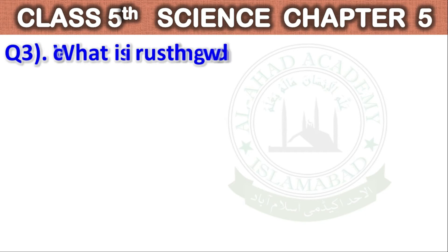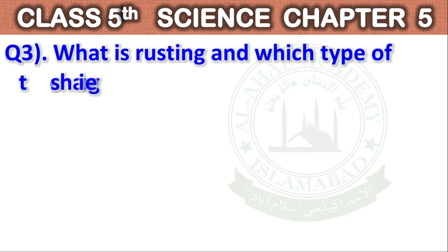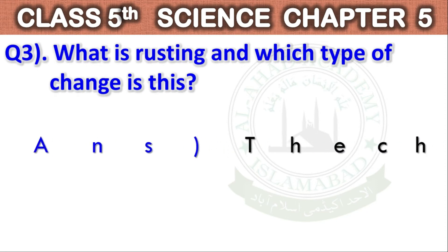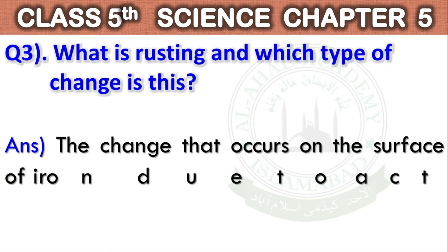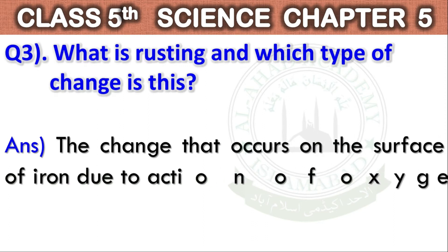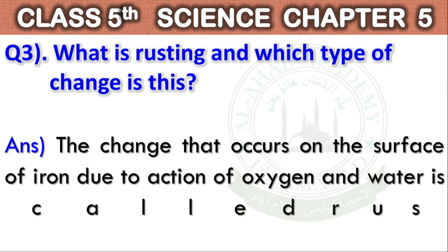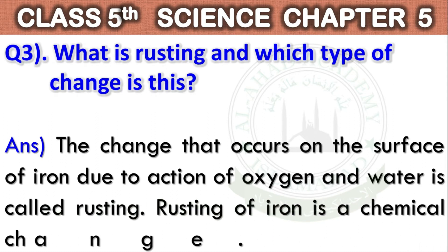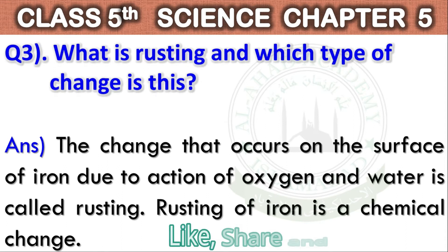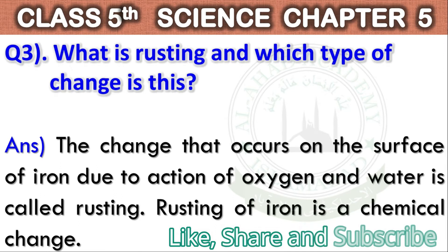Question No. 3: What is rusting and which type of change is this? The change that occurs on the surface of iron due to the action of oxygen and water is called rusting. Rusting of iron is a chemical change.